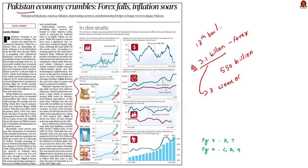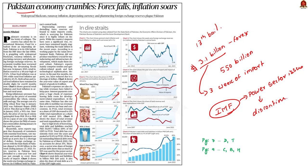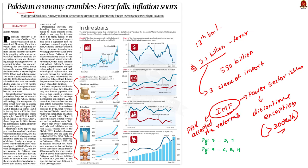IMF bailouts come with certain conditionalities. The IMF views the poor performance of the power sector as a major threat to Pakistan's economy. The IMF therefore demands to discontinue the exception for lifeline electricity consumers — that is those consuming under 300 units. This category makes up almost 88 percent of the country's power consumers, so the people of Pakistan will be unhappy. But there seems to be no other choice, and Pakistan has finally accepted the stringent conditionalities of IMF.